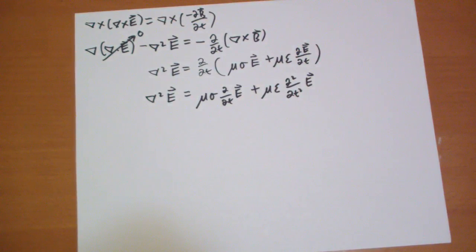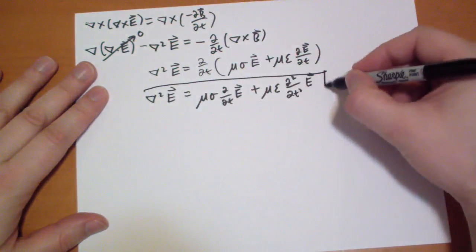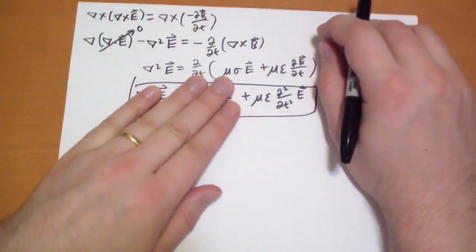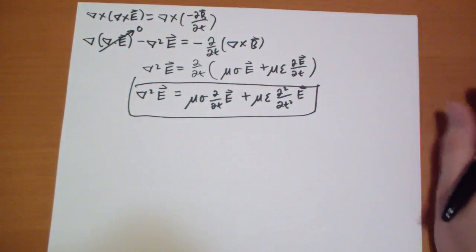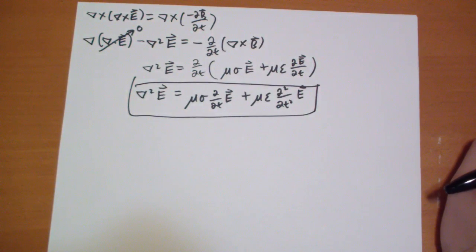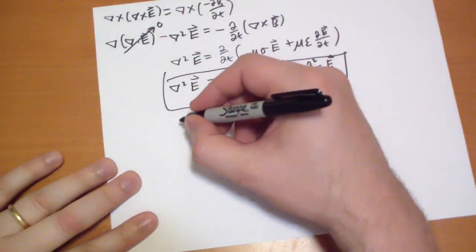This almost looks like a wave equation. If we could ignore this term in the middle it would be a very obvious wave equation but we can't. The solution for this wave equation is rather simple. Oh! If we did the same thing for the B field we would get